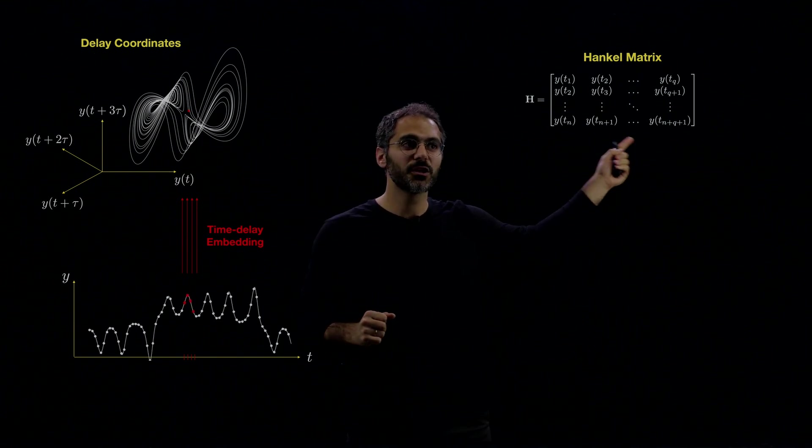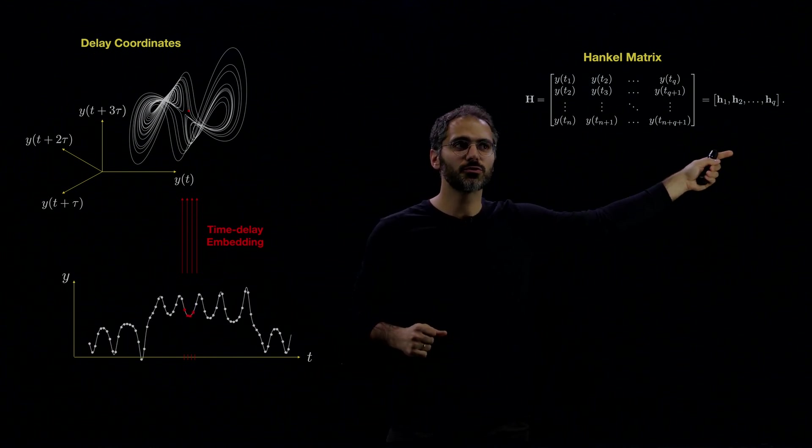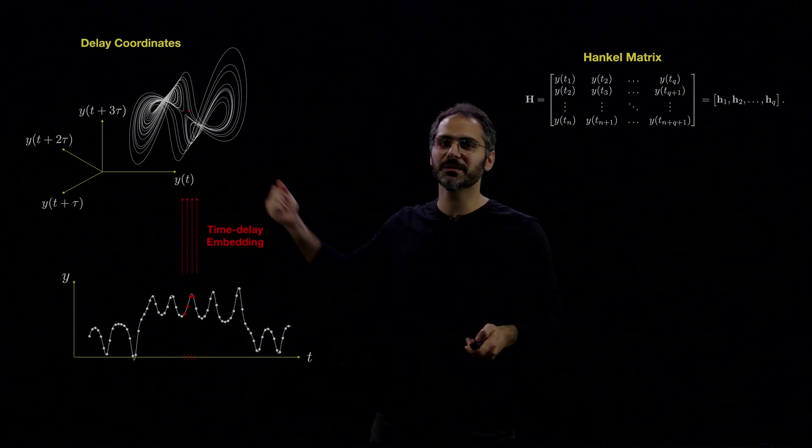So here we have Q data points, and we can write this time series in the delay coordinates as h₁, h₂ to hQ. Here I'm showing a continuous attractor, but in reality, this will also be discrete.